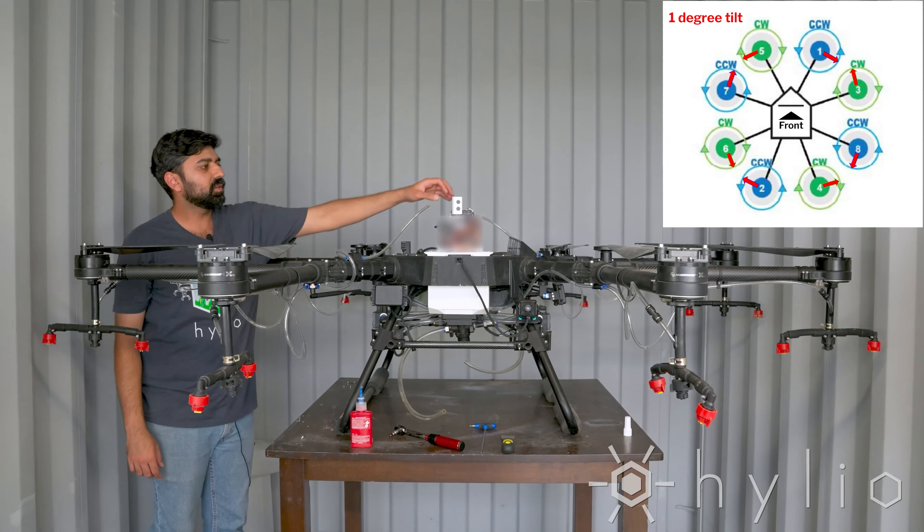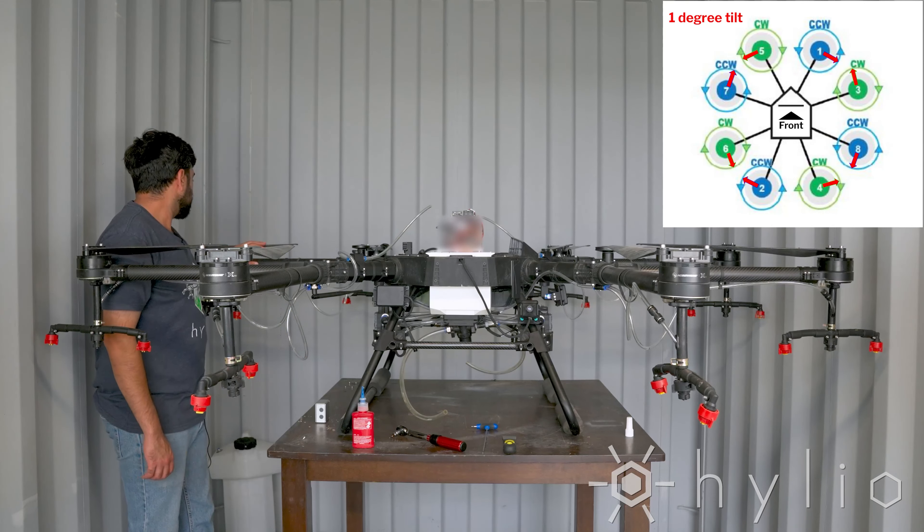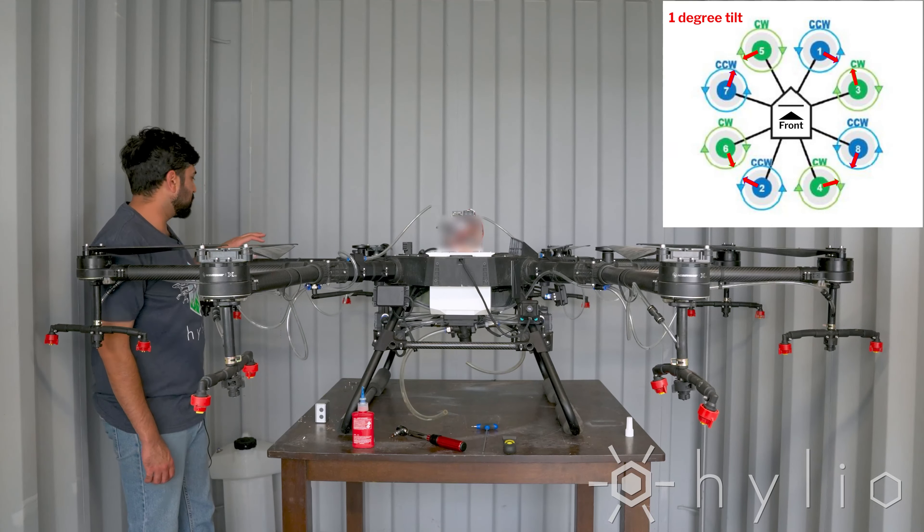Motor three is a clockwise motor, so once again you're going to be turning it one degree clockwise, which is to the right. Once you've confirmed that, go ahead, tighten the screws, torque them, repeat the process. For motor eight, this is counterclockwise. This will be turned to the left one degree, and then go ahead and repeat that for all eight motors.